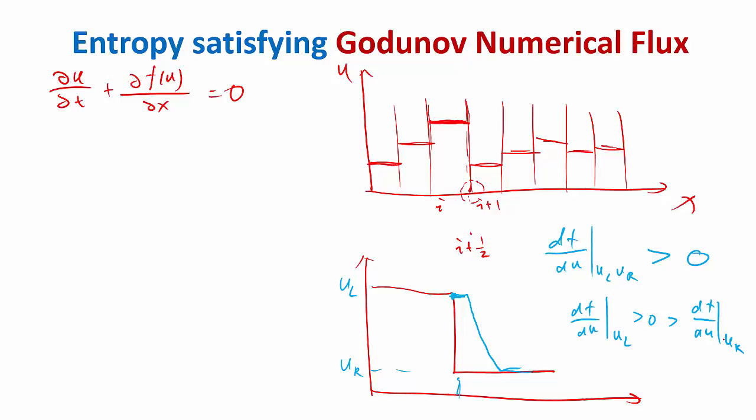So if that is the case, we are going to decide the direction of the shock according to delta f over delta u. Right? Okay, good. So if delta f over delta u is positive, then the shock is moving towards the right, and we are taking the left value to evaluate the flux. Otherwise, we are taking the right value to evaluate the flux.